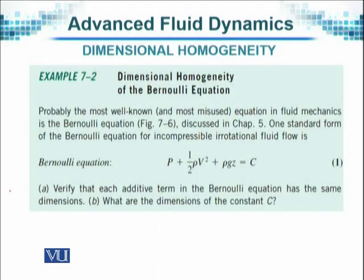First, we try to work out this example. The Bernoulli's equation is p plus half rho v square plus rho gz is equal to constant. It can be written in different forms — sometimes we divide throughout by rho, sometimes not. But they are all equivalent forms of Bernoulli's equation. Now, given the present form, we have to verify that each term has the same dimension.